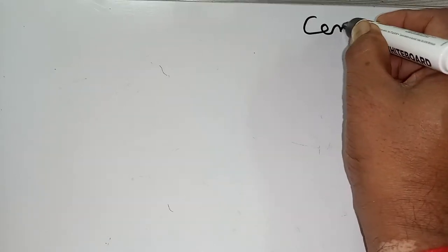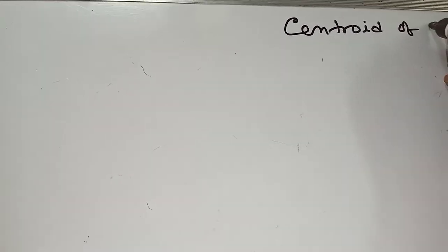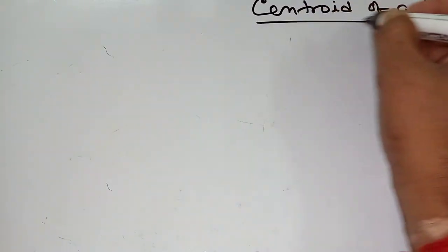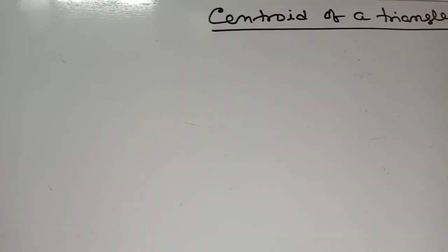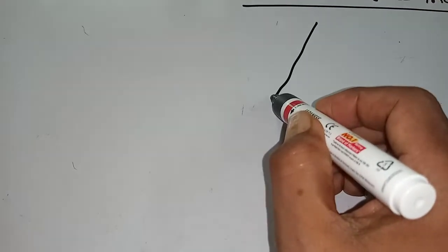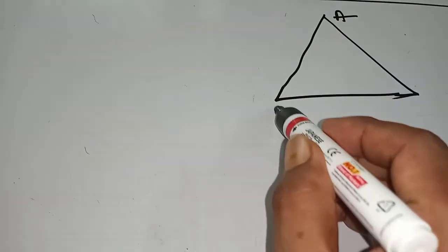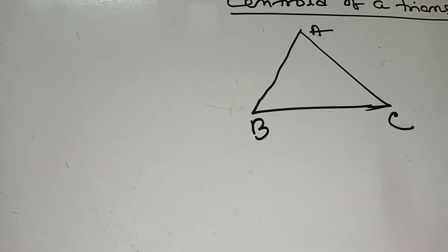Centroid of a Triangle. What is a centroid? Centroid is the point where the medians intersect at a point, and that point is called the centroid. To find the centroid of a triangle, consider triangle ABC.